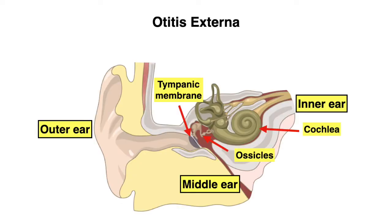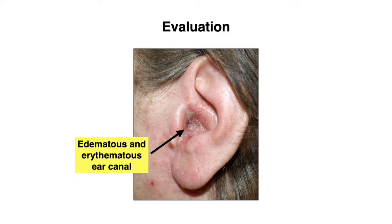Let's now move on to otitis externa, which is an infection of the outer ear and not the middle ear as we saw with otitis media. With otitis externa, you might actually see signs of inflammation or infection just from looking at the ear externally. You can see edema and erythema of the ear canal, and these are also the same findings you will see if you're using the otoscope.